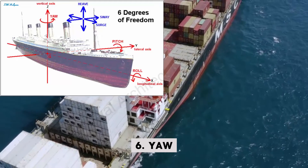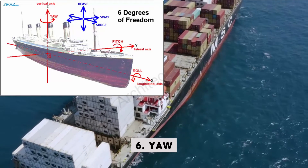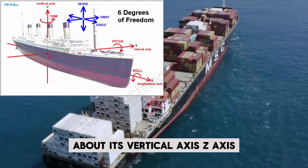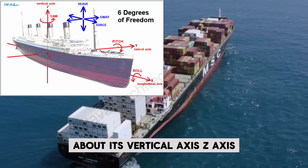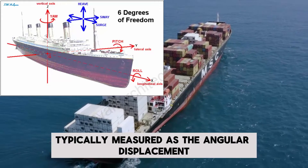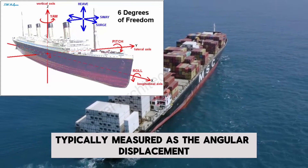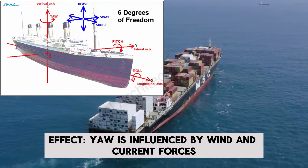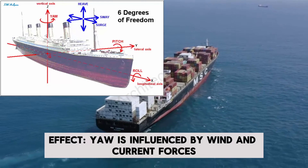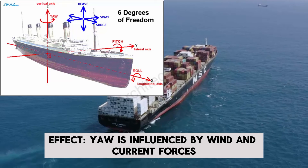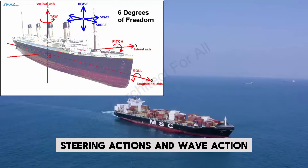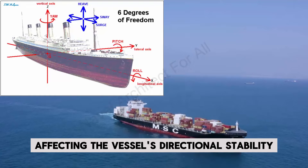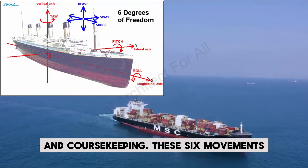6. Yaw. Definition: Yaw is the rotational movement of the vessel about its vertical axis (z-axis), typically measured as the angular displacement from port to starboard. Effect: Yaw is influenced by wind and current forces, steering actions, and wave action, affecting the vessel's directional stability and course-keeping.